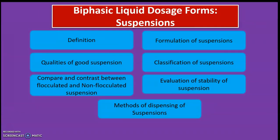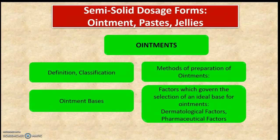The next chapter is Biphasic Liquid Dosage Forms — Suspensions. The most important points are: the definition of suspension, qualities of a good suspension, compare and contrast between flocculated and non-flocculated suspensions, formulation of suspensions, classification of suspensions, evaluation of stability of suspension, and methods of dispensing of suspension. The qualities of a good suspension and the comparison between flocculated and non-flocculated suspensions are the most important from an exam point of view.